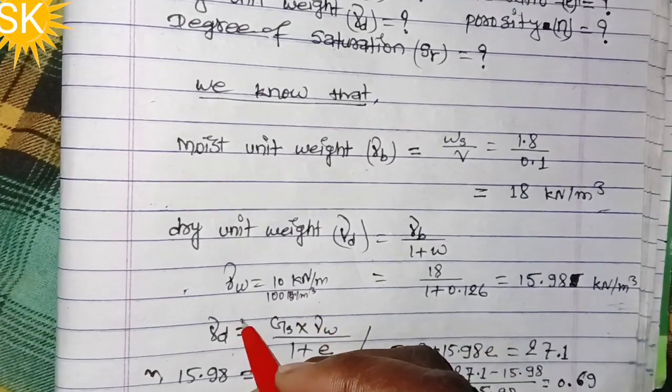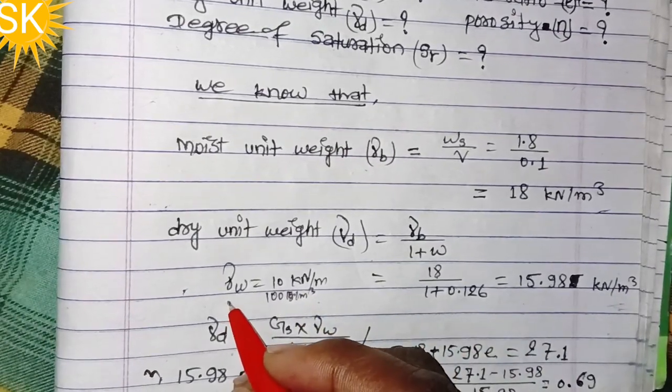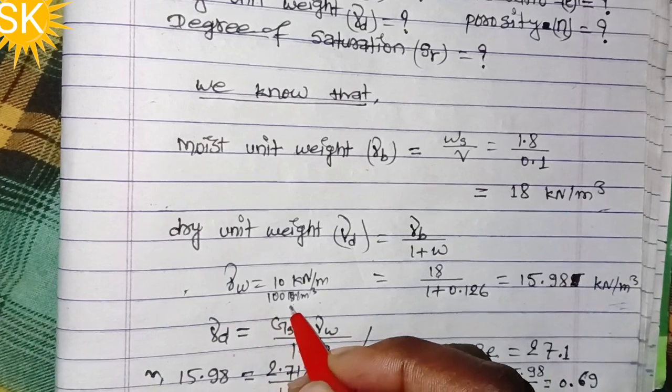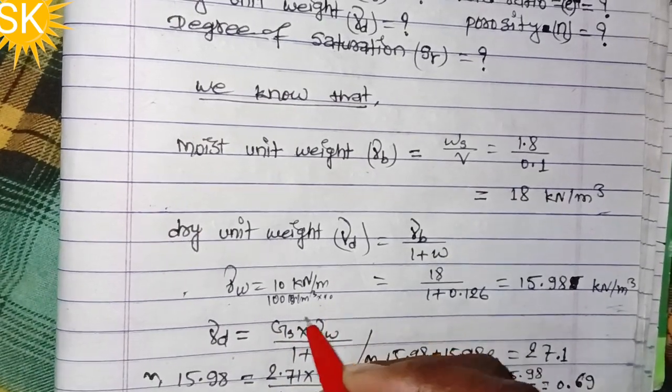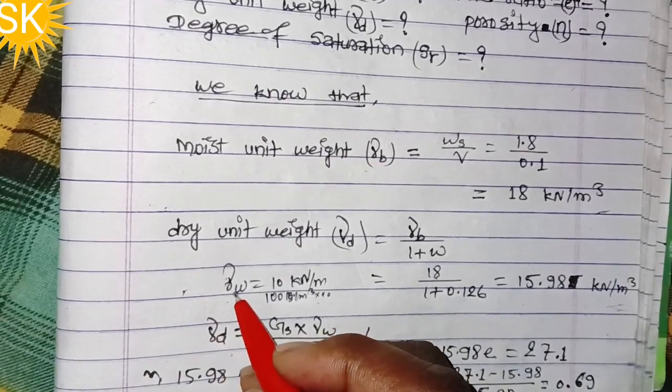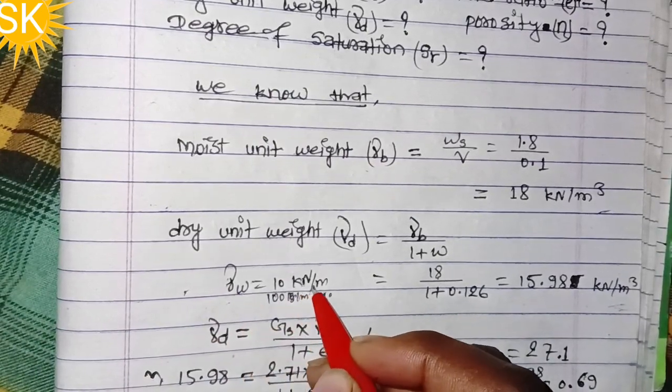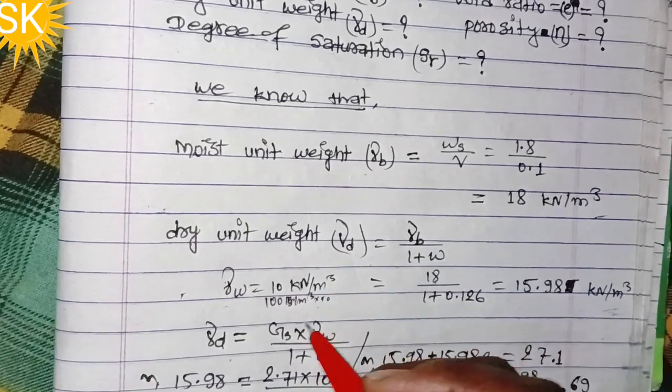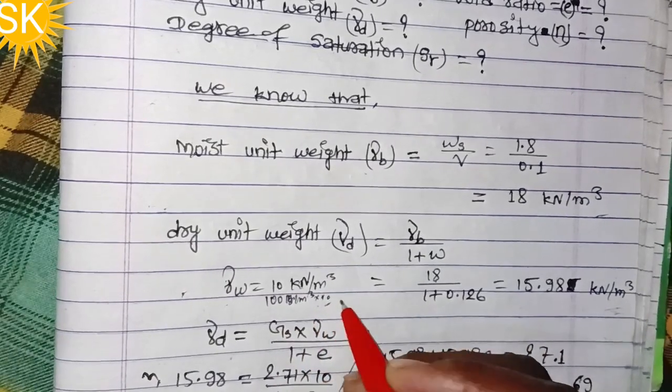This is a constant value - density of water, unit weight of water. Remember, unit weight of water is 10 kilonewtons per meter cube or 1000 kg per meter cube.